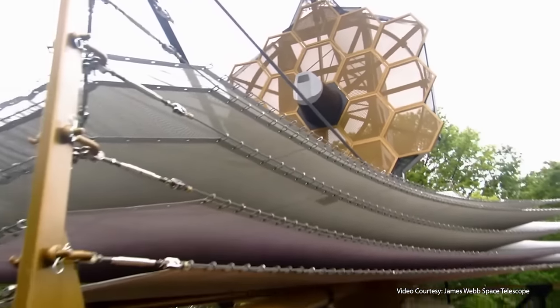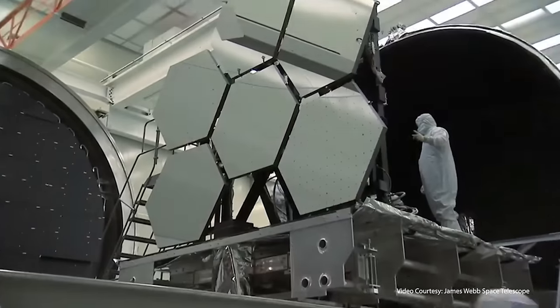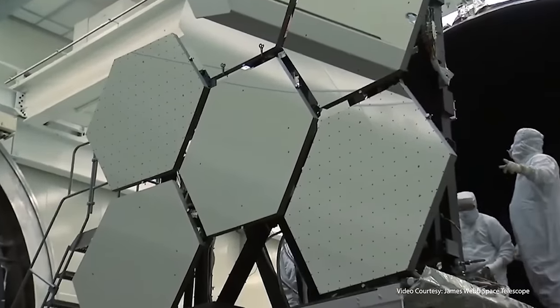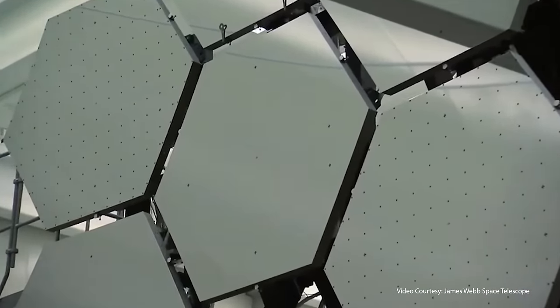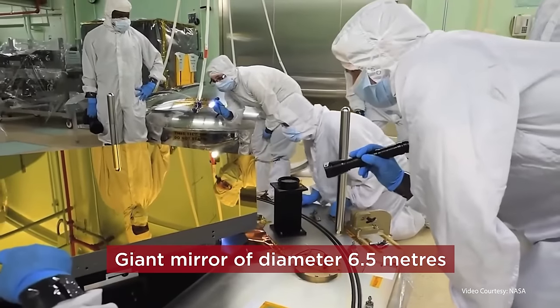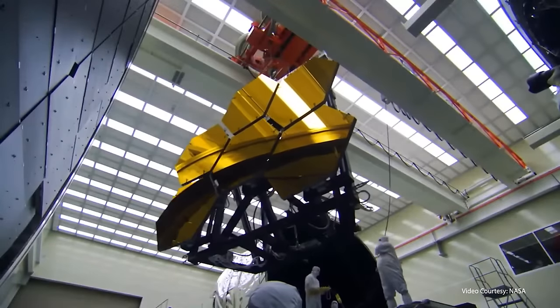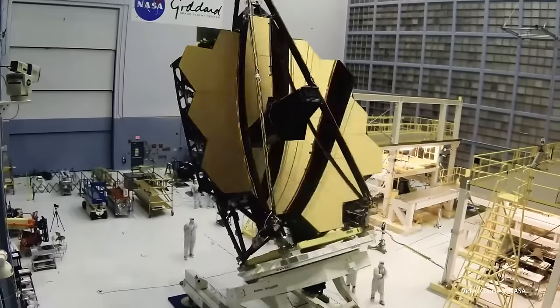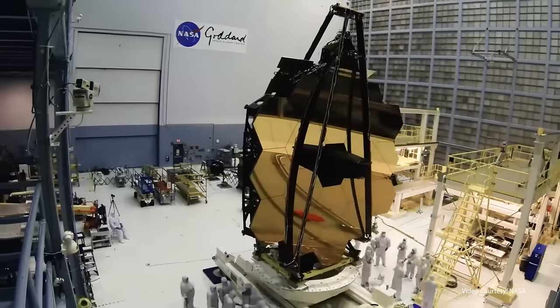It is a reflecting telescope that combines curved mirrors that reflect light and form an image. The structure is actually a giant mirror of diameter 6.5 meters, using which the telescope can collect and reflect more light to see objects farther away in the universe.